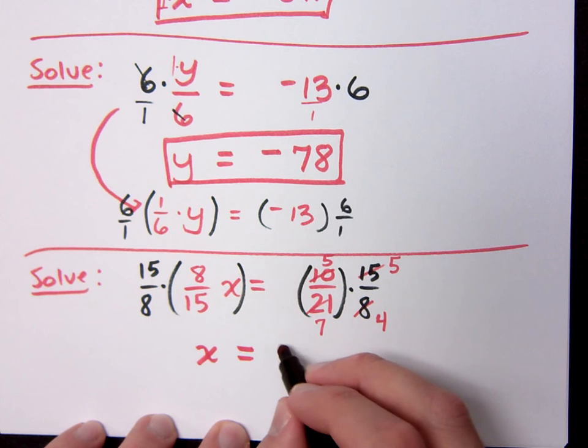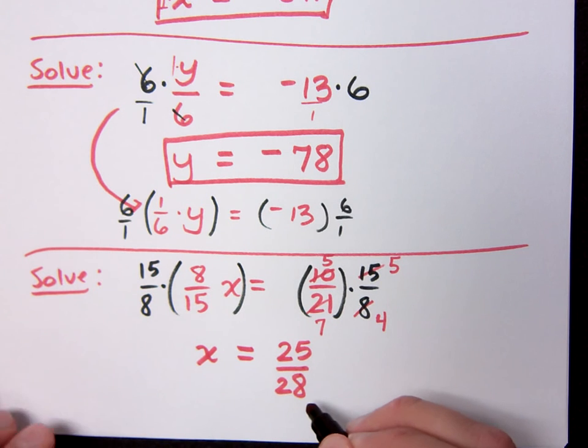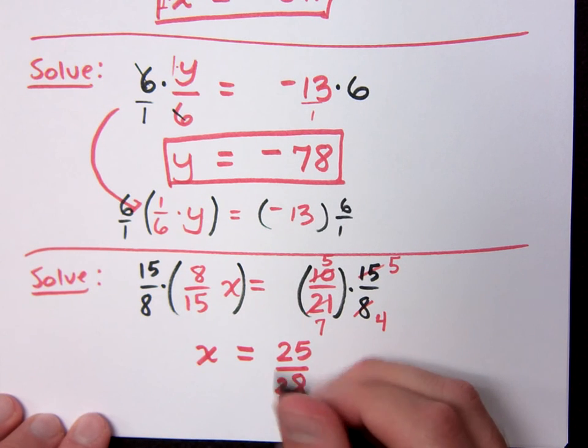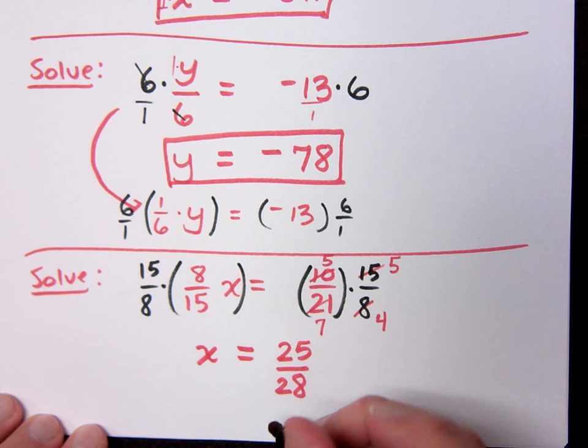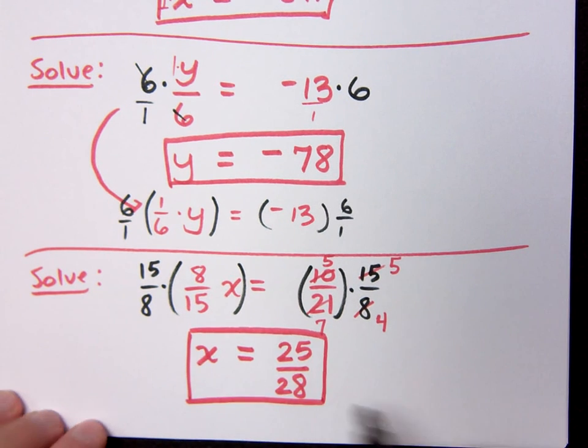Now all I can do is multiply these guys, and what do I get? I get 25 over 28. Can I reduce that at all? Can I reduce those 2s? LOL, JK.